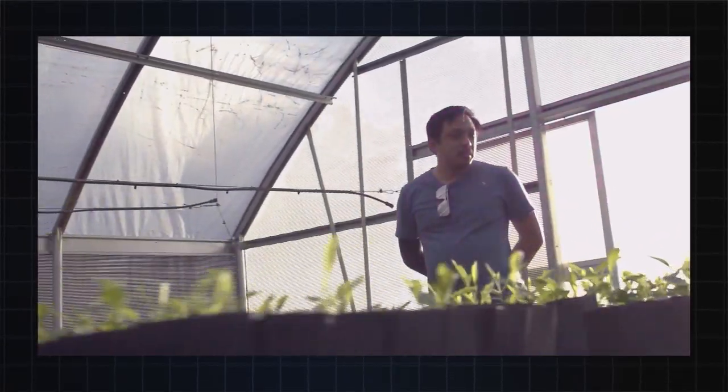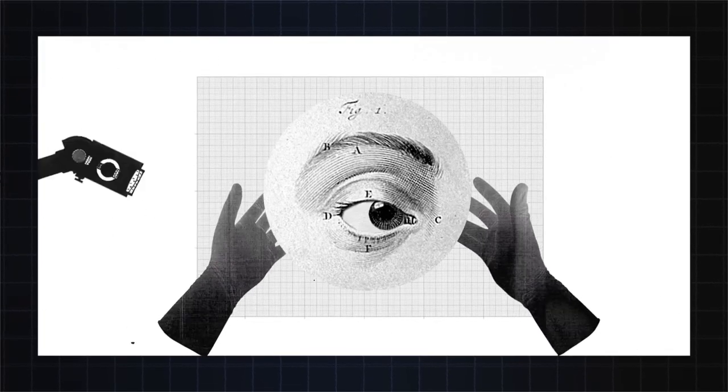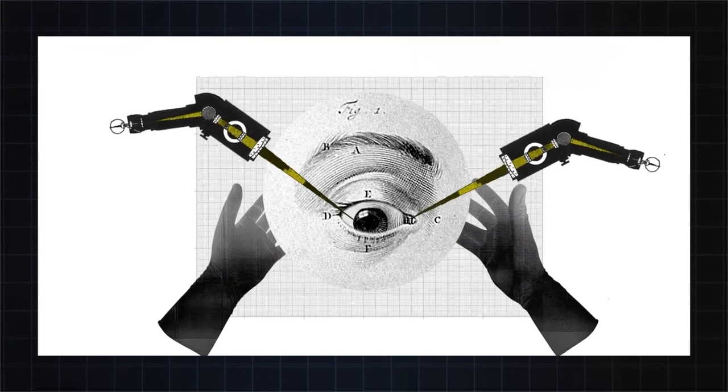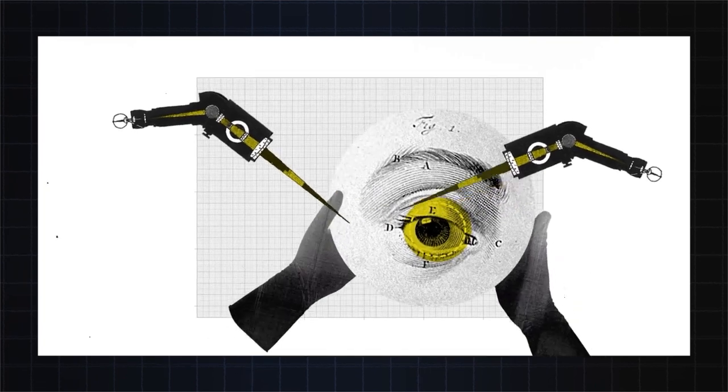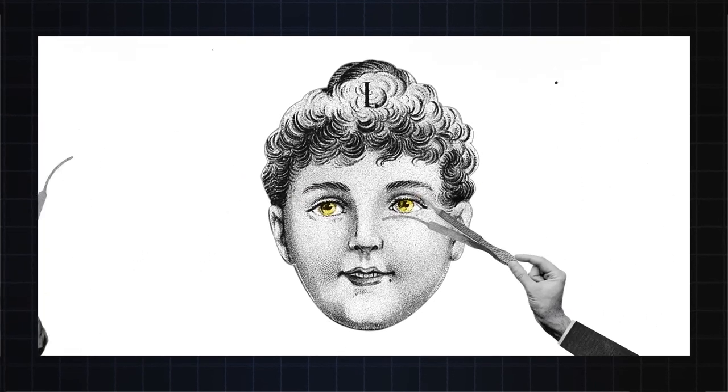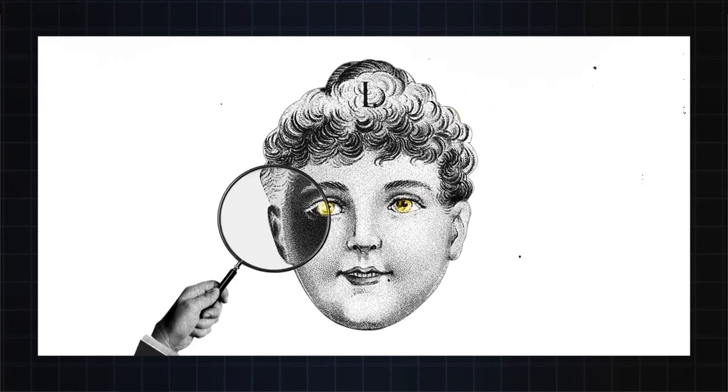For some, such as Reddit executives Yishan Wong and Steve Huffman, this means eliminating weaknesses to optimize chances of survival if everything goes south. Both Huffman and Wong reportedly underwent LASIK eye surgery in preparation for the end. This surgery, it was hoped, would give them the keen eyesight required to stay alert, and crucially, alive if the worst were to happen.